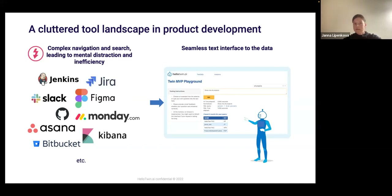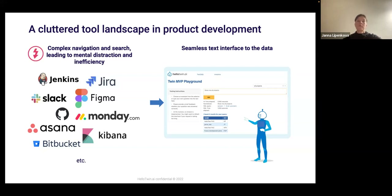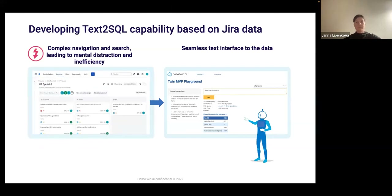All of this creates an unsatisfying experience, leading to mental noise, distraction, and inefficiency in our work. Our goal is to build a seamless and direct text interface to all this data — an interface that lets you just talk to your data, get specific data by asking natural language questions, do simple analysis and aggregations. In the future, we also want to implement reverse ETL, meaning you not only read or analyze data, but actually write and act on it.